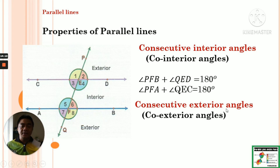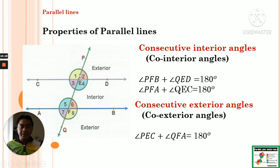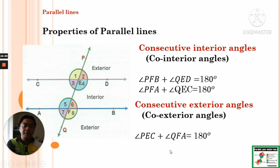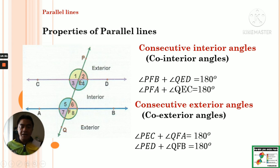For consecutive exterior angles, or co-exterior angles, these are outside the parallel lines. Angle PEC plus angle QFA — angle 1 plus angle 7 — equals 180 degrees. These are co-exterior angles on the same side of the transversal. Also, angle PED plus angle QFB — angle 2 plus angle 8 — their sum is also 180 degrees and they are co-exterior angles.